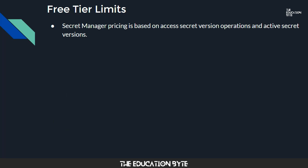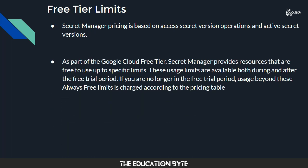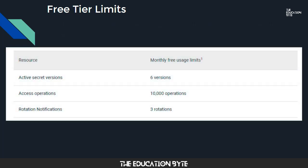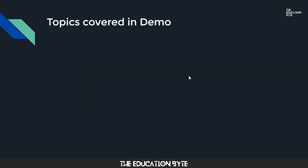Secret Manager pricing is based on access, secret version operations, and active secret versions. As part of the Google Cloud free tier, Secret Manager provides resources that are free to use up to specific limits. These usage limits are available both during and after the free trial period. Usage beyond the always-free limits is charged according to the pricing table. Monthly free usage limits are aggregated across projects by billing account and reset every month. You are billed only for usage past the monthly free usage limits, as shown in the table.